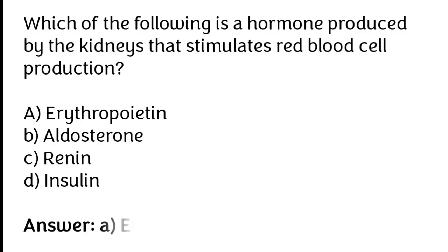The correct answer is option A. Erythropoietin is a hormone produced by the kidneys that stimulates red blood cell production.